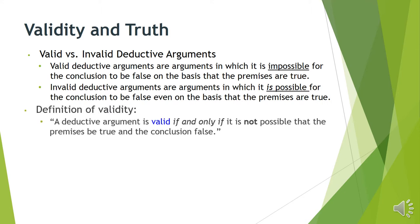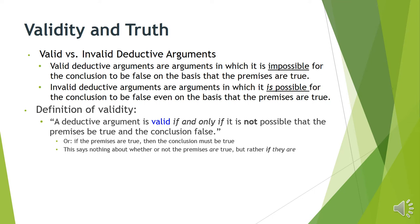The definition of validity: a deductive argument is valid if and only if it is not possible that the premises are true and the conclusion false — or equivalently, if the premises are true, the conclusion must be true. Notice this says nothing about whether the premises are in fact true. It's a conditional claim asserting a relationship between the premises and the conclusion, not saying something about the way the world actually is.